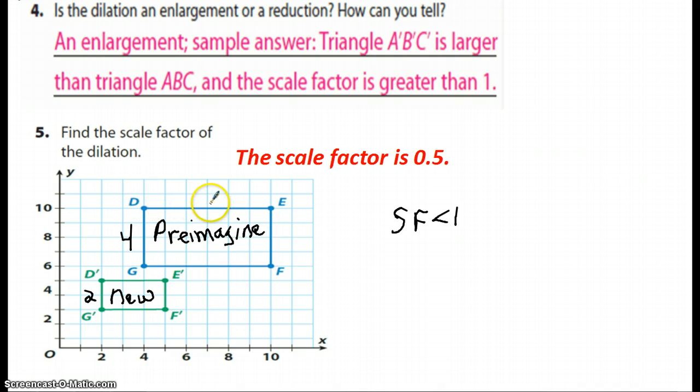Let's go across and do D to E. I see one, two, three, four, five, six. And down here from D prime to G prime, I see one, two, three.